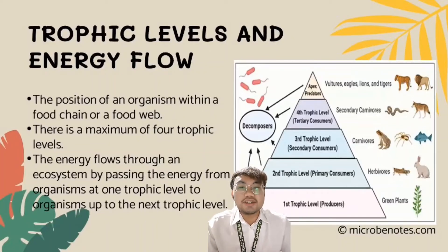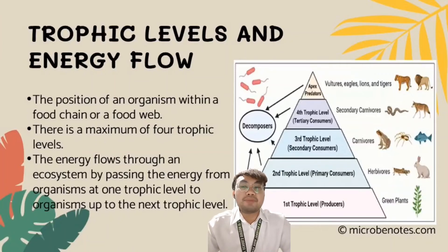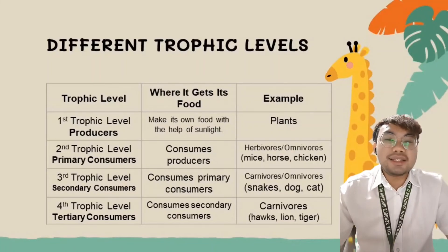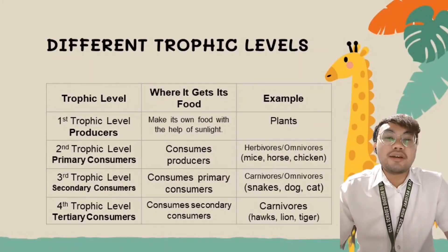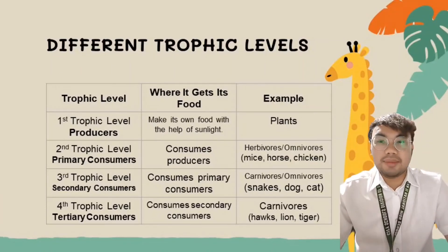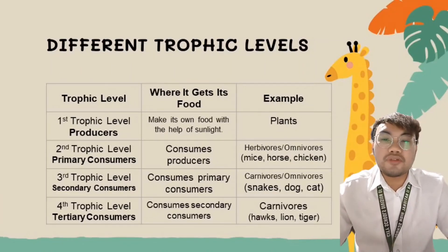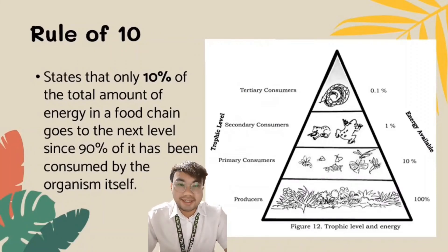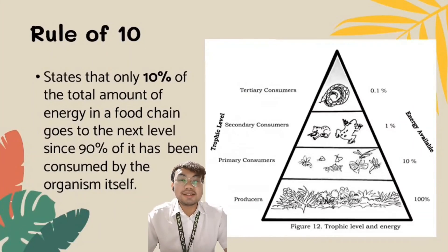The position of organisms in an energy pyramid is based on their sequence in the food chain, where producers are at the first trophic level at the base of the pyramid and predators are at the top. Energy flows through an ecosystem by passing from organisms at one trophic level to organisms at the next trophic level. There is a maximum of four trophic levels, as you can see in the table. The flow of energy follows the rule of 10, which states that only 10% of the total amount of energy in a food chain goes to the next trophic level, since 90% of it has been consumed by the organism itself.